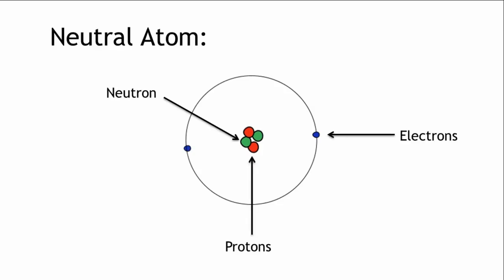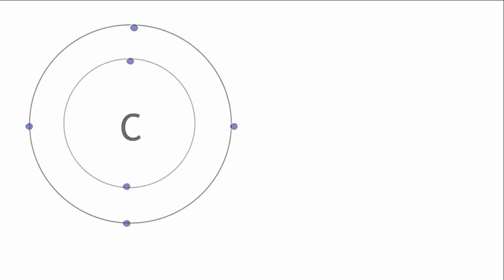We also know that in a neutral atom, the number of electrons is always equal to the number of protons. So in a neutral atom of carbon, there are six protons, which means there must be six electrons.